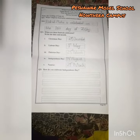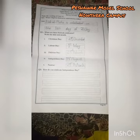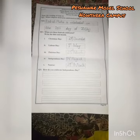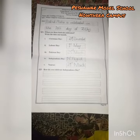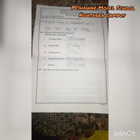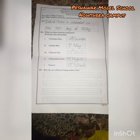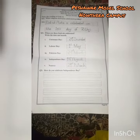Question number two is: when are these festivals celebrated? Write the date and month. The events are the following, and you write just the date and month.